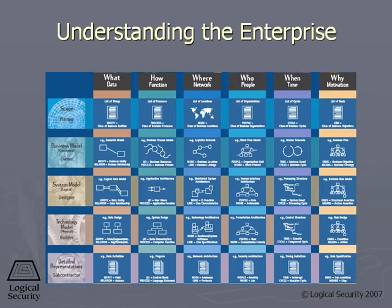There's a model, the Zachman model, that we cover in enterprise architecture. This model has been around for a long time and it cuts up an organization into understandable or digestible components. Because it's really difficult to say: what takes place in this company? What makes it run? What has to be in place?